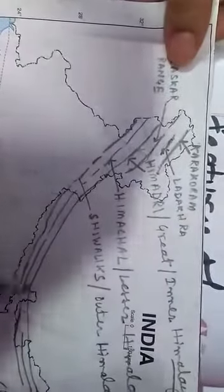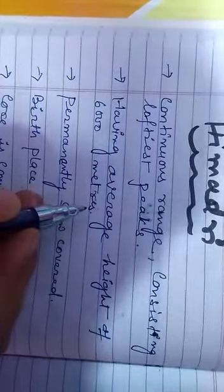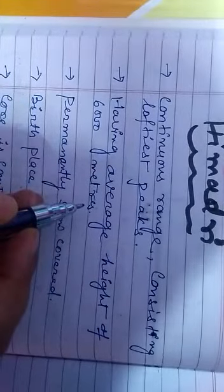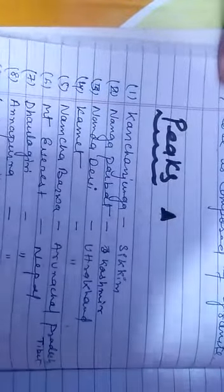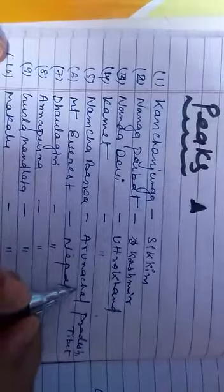First, we will learn about the features of Himadri, also known as Great or Inner Himalayas. It is a continuous range consisting of the loftiest peaks, with an average height of 6,000 meters. It contains all the prominent Himalayan peaks: Kanchanjunga in Sikkim, Nangaparvat in Kashmir, Nanda Devi in Uttarakhand, Kamet in Uttarakhand, and Namcha Barwa in Arunachal Pradesh.